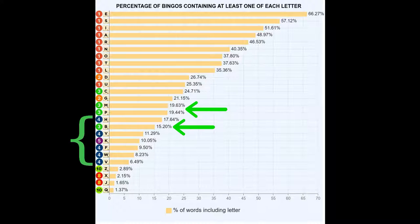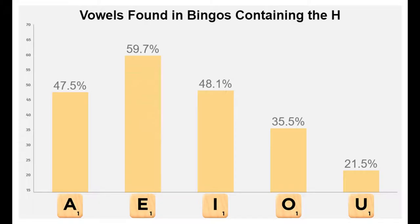Bingoing may not be a strength of the H, but it's not a weakness either. So what tiles should you try and pair with the H? Let's look at vowels first.